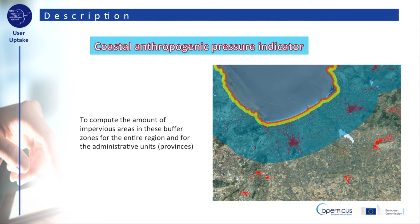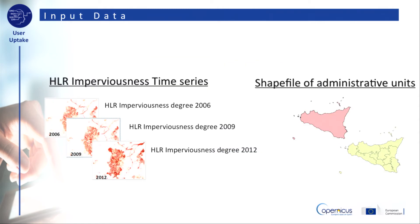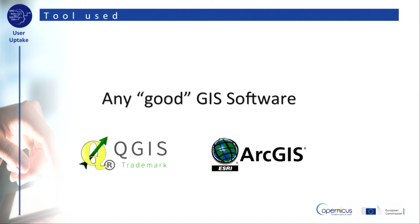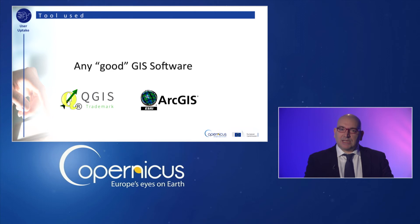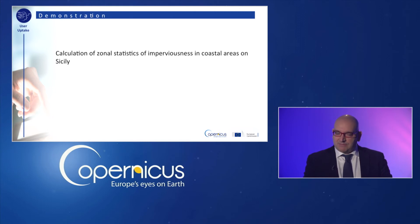For these buffer zones and for each administrative unit, the amount of impervious areas is computed. Besides the imperviousness time series, the other input data are the shapefiles of the administrative units of Sicily. It will be considered the whole region and the nine provinces of it. To perform the computation, a GIS software will be used. Now let's start the demo.